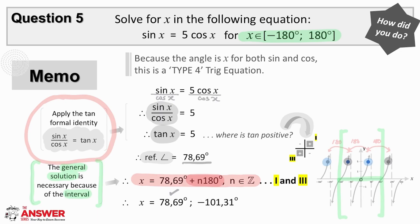If we then make n minus 1 and therefore subtract 180, we get negative 101.31 degrees, and this does lie in the interval. We can then take n to be minus 2, but this solution again falls outside the interval required. And so these are the solutions for x for the above equation.